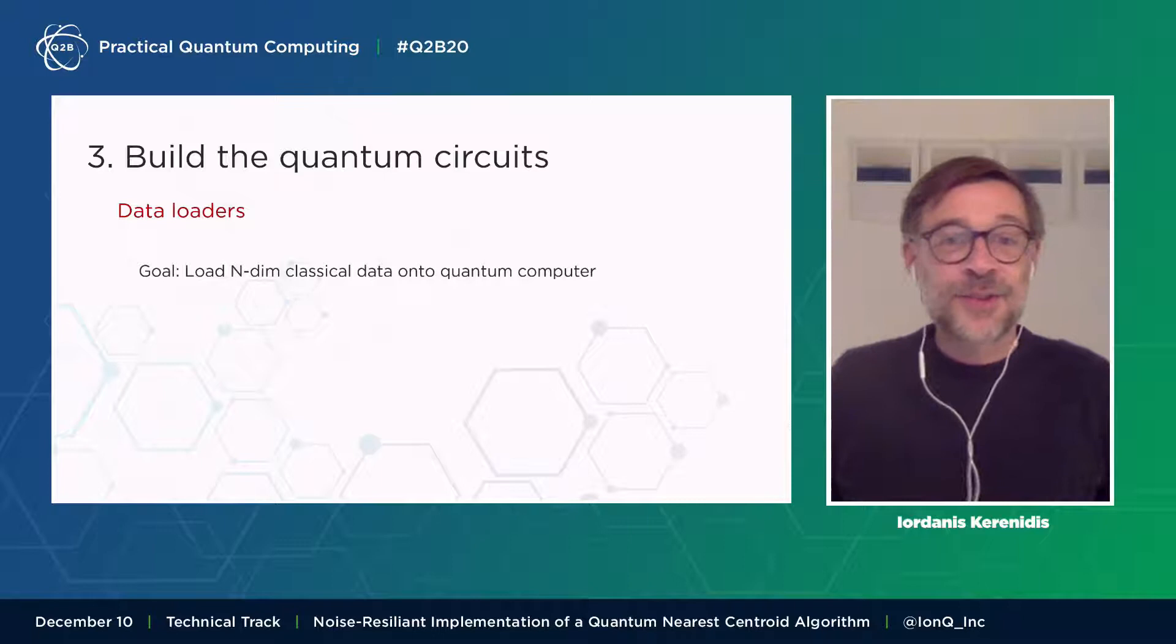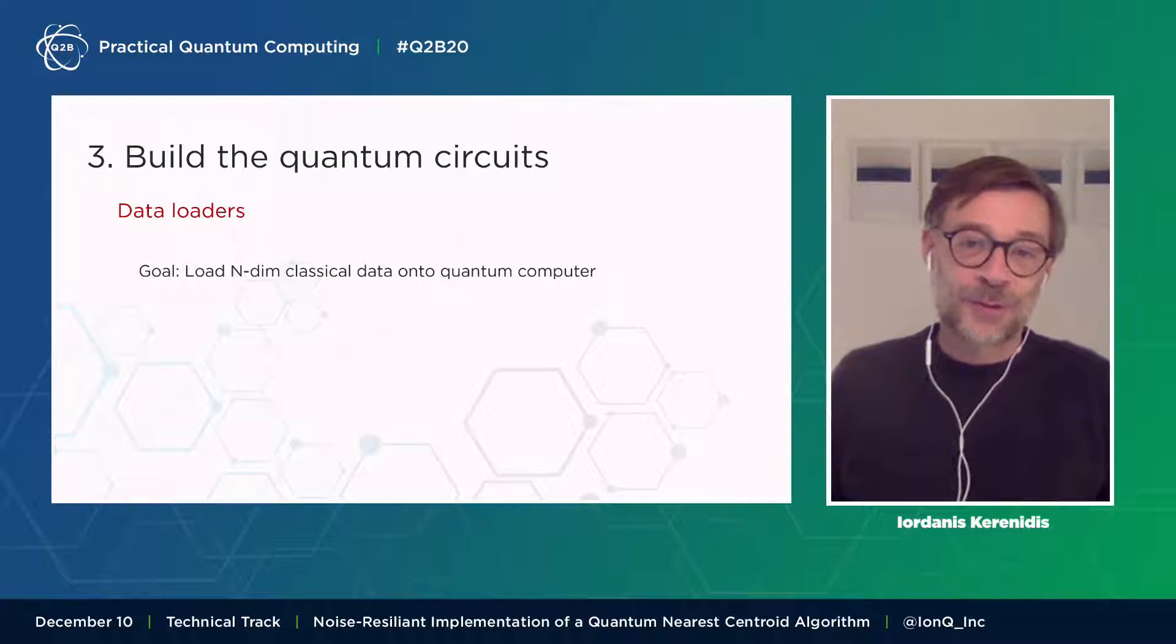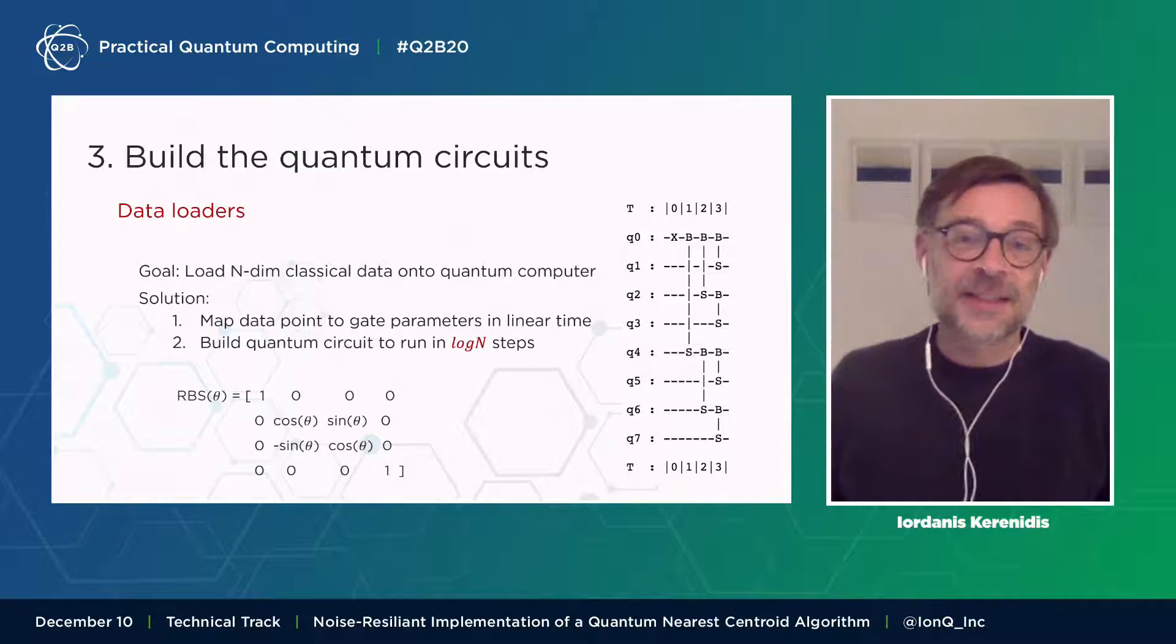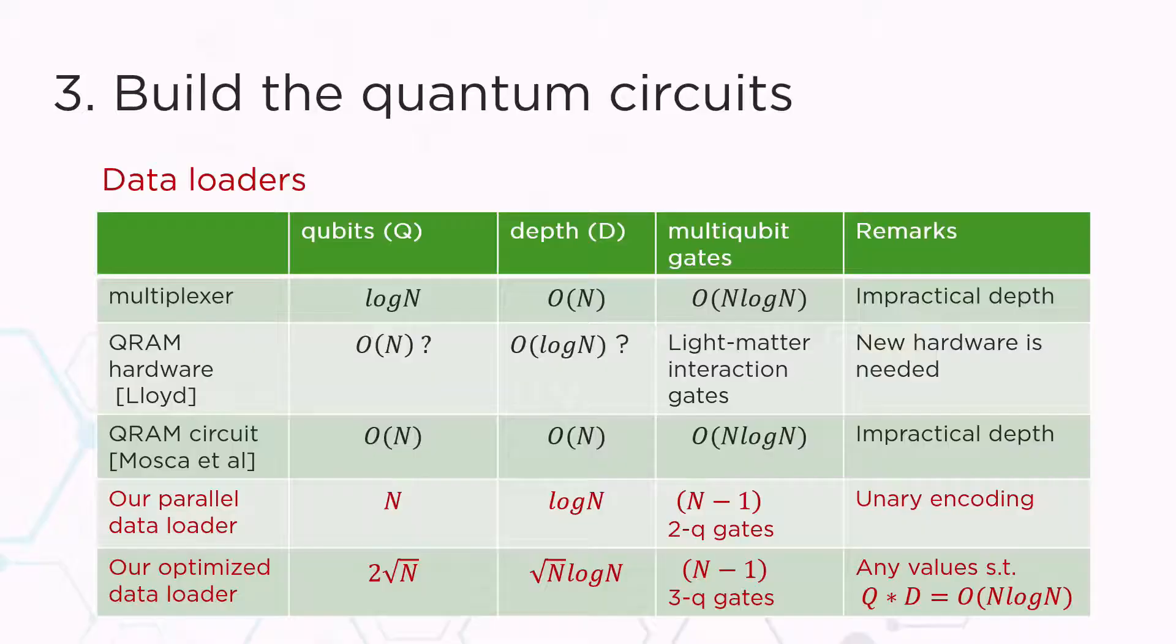The first step of our procedure is to build the quantum circuits. The first thing we have to build is what we call the data loaders. These are quantum circuits that load n-dimensional classical data onto the quantum computer. In order to do that, our solution is very simple. We first look at the classical data and map our data points to parameters for the gates of this quantum circuit. This happens in linear time and only once. And once we do that, we can build quantum circuits that can create these quantum encodes of the data that we need. And they run, very importantly, in log n steps, only logarithmic in the dimension of the data points. The gates that we use are the ones defined below, which are actually quite useful for many different applications.